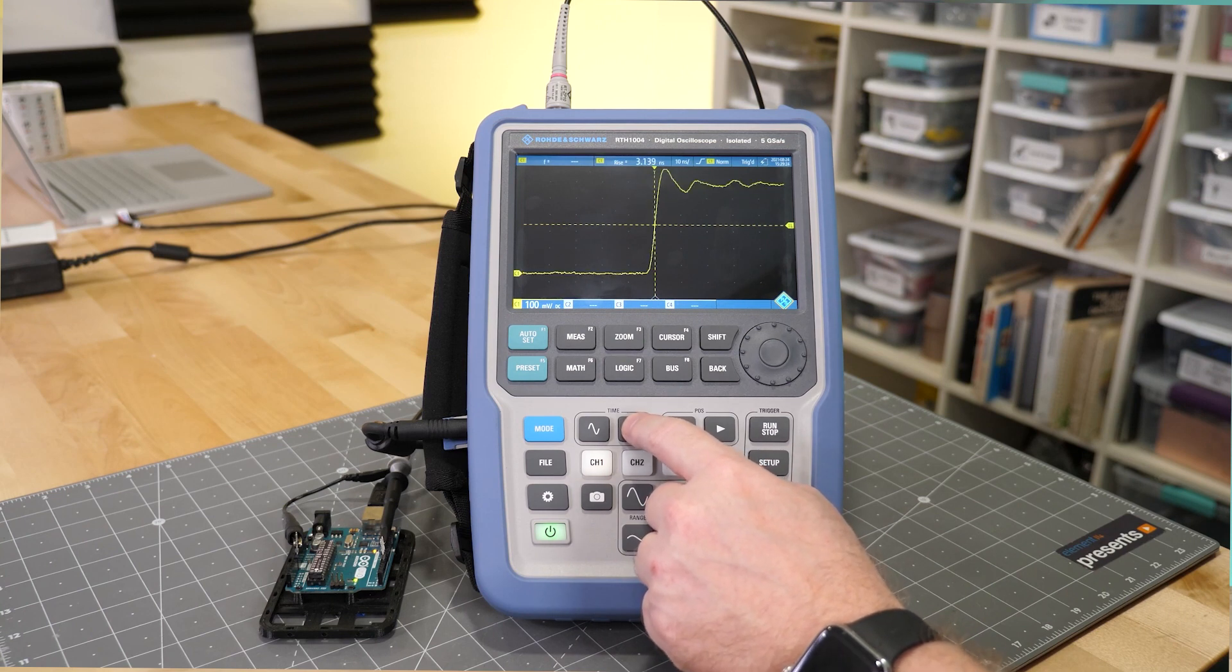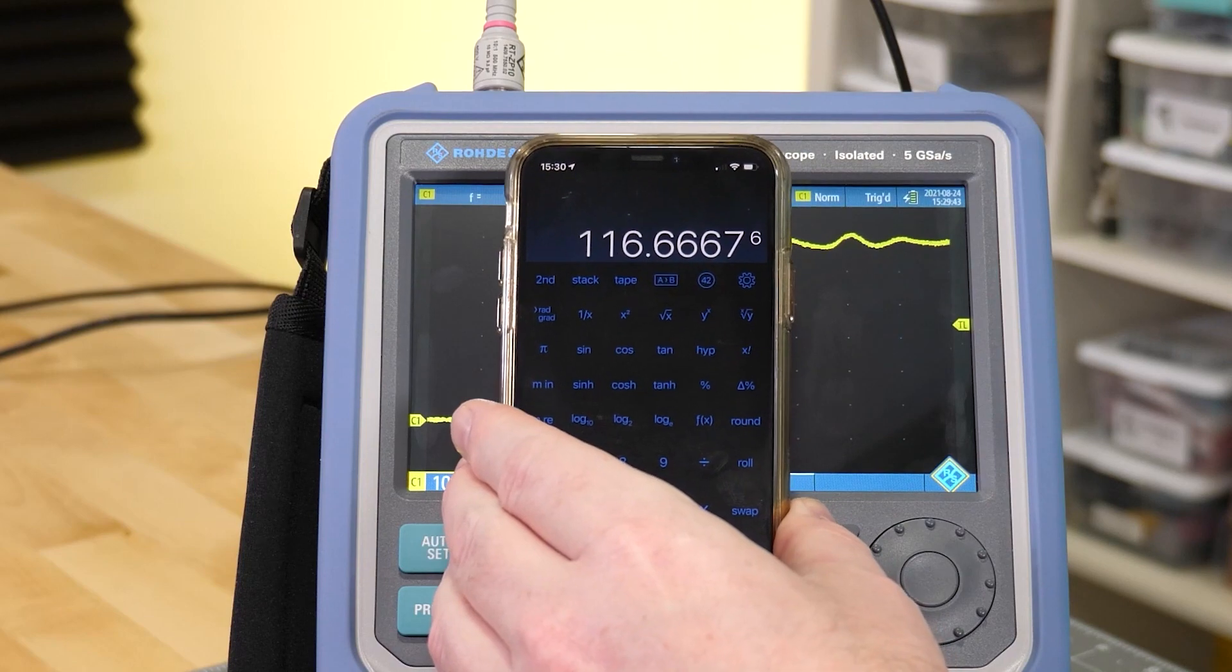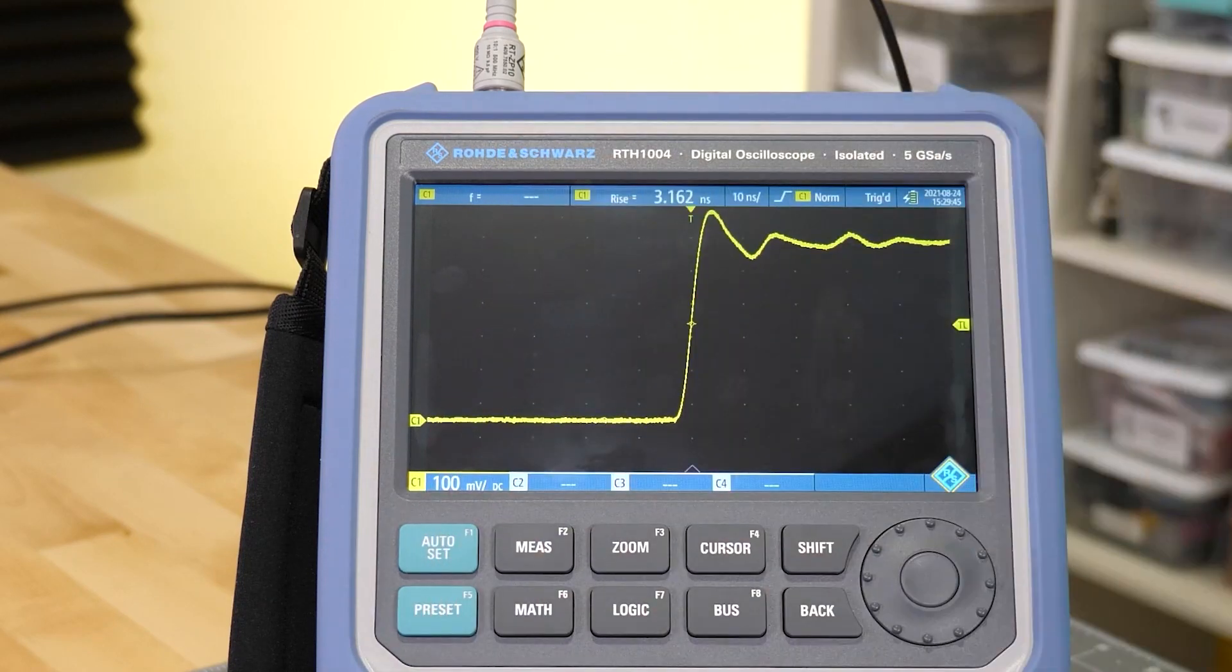When the filters are turned off, the rise time for this signal is now about 3 nanoseconds, not 78 microseconds. And if we do that same calculation as before, we can see this signal has about 116 MHz of content, which means the 500 MHz scope should have enough bandwidth to accurately reproduce it.